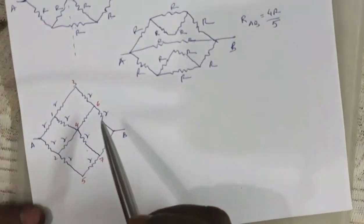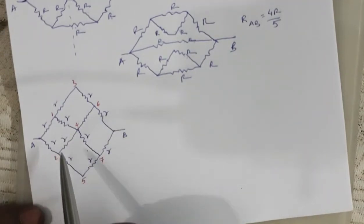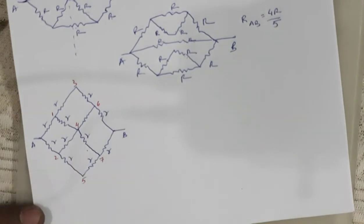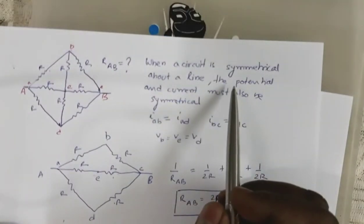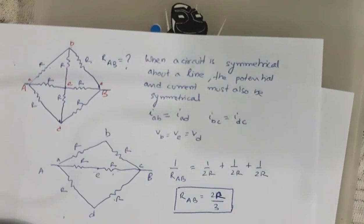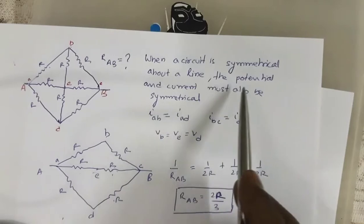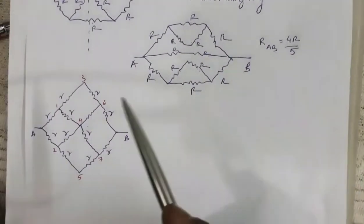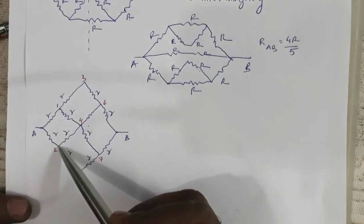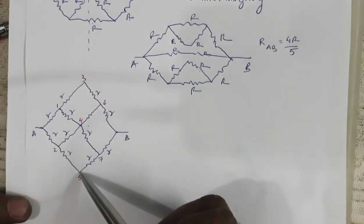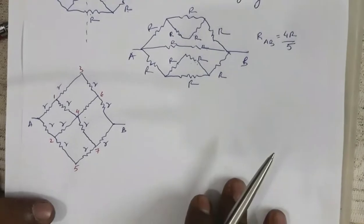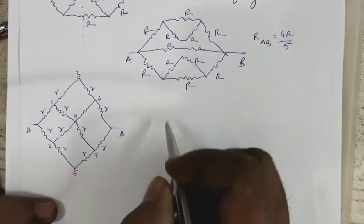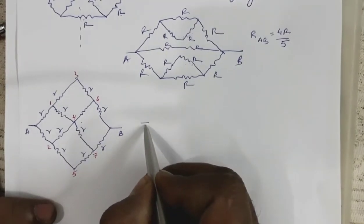Now let us see one more circuit — this is a kite circuit and again all the resistors are identical. We have to find the equivalent resistance between A and B. As I told you in the first circuit, when a circuit is symmetrical about a line, the potential and current must also be symmetrical. I will apply that concept here. Points 1 and 2 must have the same potential; points 3, 4, and 5 must have the same potential; and points 6 and 7 must have the same potential.